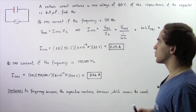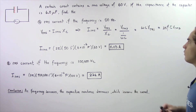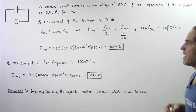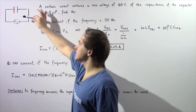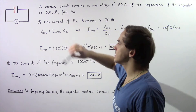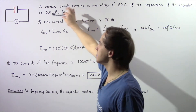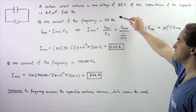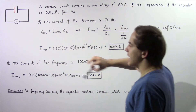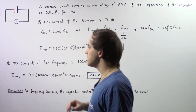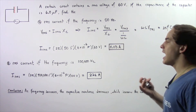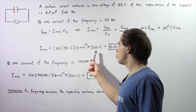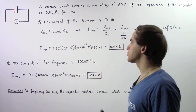Suppose a certain circuit contains a root mean square voltage of 60 volts. If the capacitance of our capacitor inside the circuit is 6 µF, find in part A the root mean square current if the frequency is 50 Hz, and in part B find the root mean square current if the frequency is increased to 100,000 Hz.